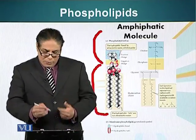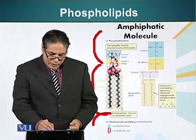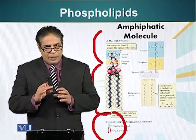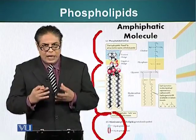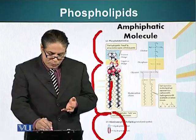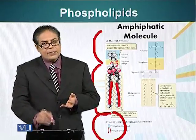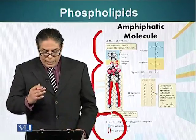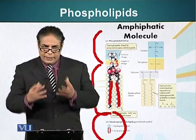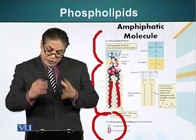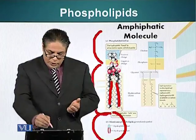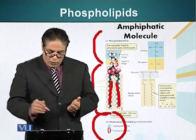This molecule is abbreviated in this form, shown in the lower part of your screen, where the blue part or the head part represents the hydrophilic part of this molecule, and the two red tails represent the hydrophobic part. Let's see how this molecule arranges itself in the cell such that part of this molecule can avoid water, whereas the other part can stay close to water.